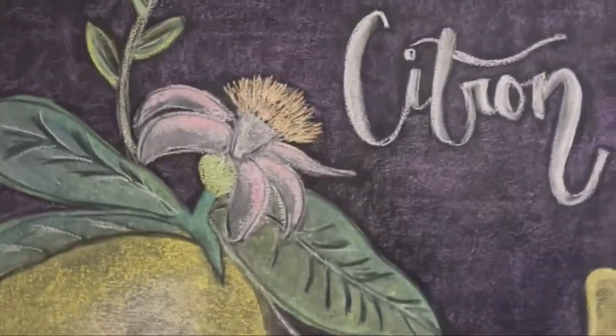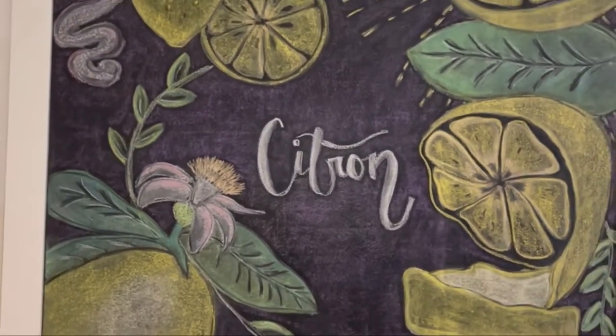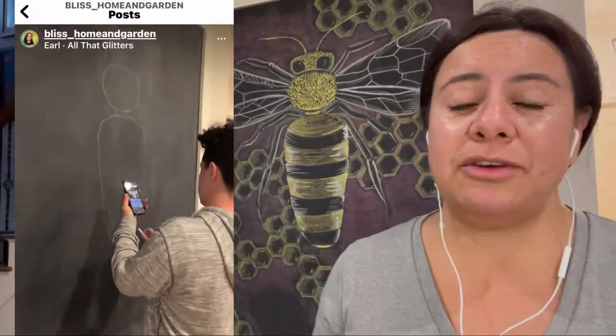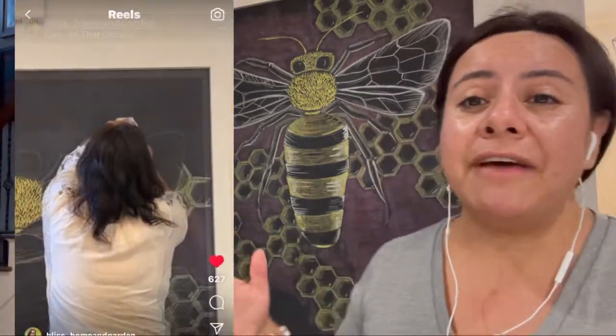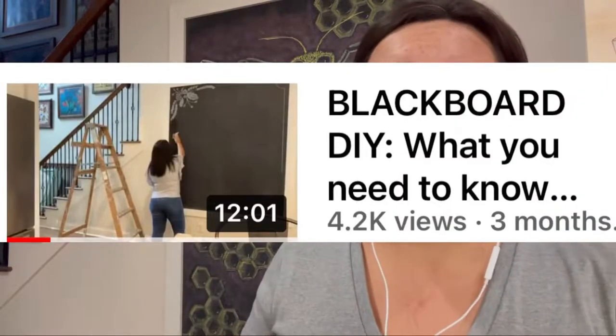These lemons are the fourth design that goes on this chalkboard. One of my siblings and I created this bee and I thought it's really good work. Actually, if you want to see a little reel of it, you can see it on my Instagram page. And I do have how I made the whole blackboard on another video that I will put in the description below.